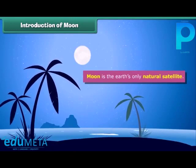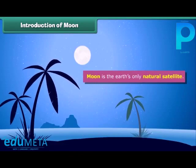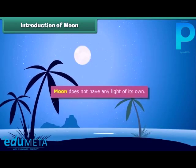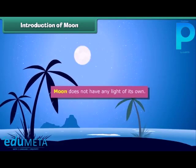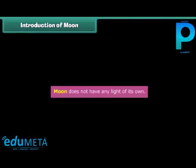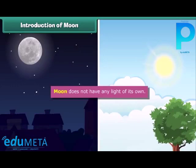The moon is the second brightest object in the sky after the Sun, but the moon does not have any light of its own. The light you see is actually from the Sun reflecting off the surface of the moon. So if the Sun wasn't there, we would not be able to see the moon.